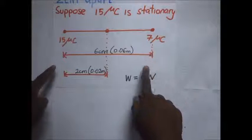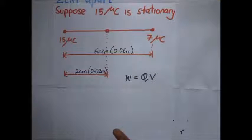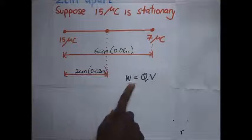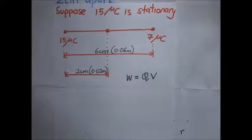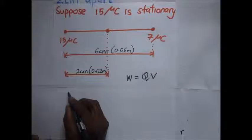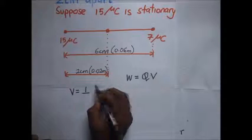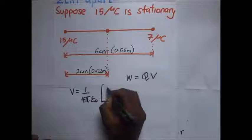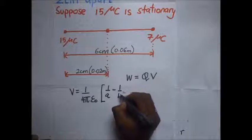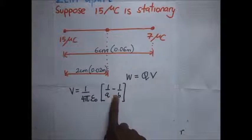We first find the potential difference V, and after finding that we simply multiply to get the work done. From our previous tutorial we derived the expression: V is equal to (1 over 4πε₀) multiplied by (1/a − 1/b), where a is the shorter distance and b is the longer distance.